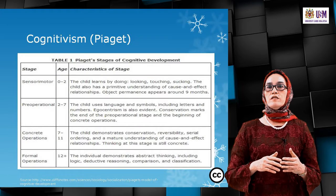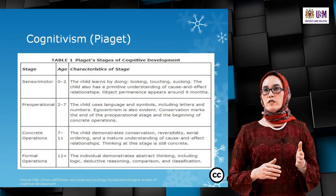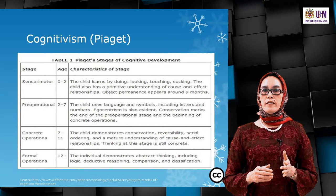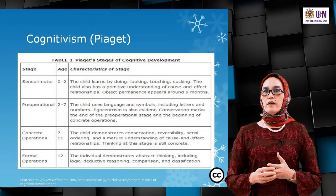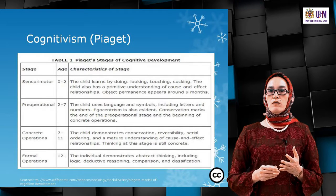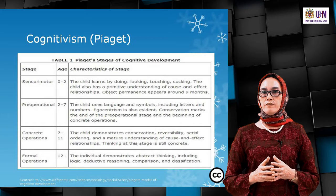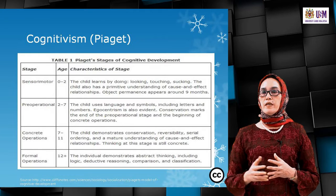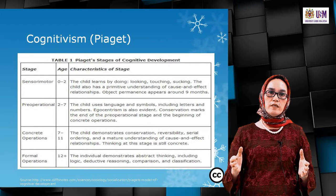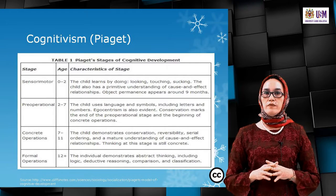Piaget described stages of cognitive development. From age zero to two is the sensorimotor stage, where the child learns by doing — looking, touching, sucking — with a primitive understanding of cause and effect. Object permanence appears around nine months. At this age, there is no cognitive development in the higher sense.